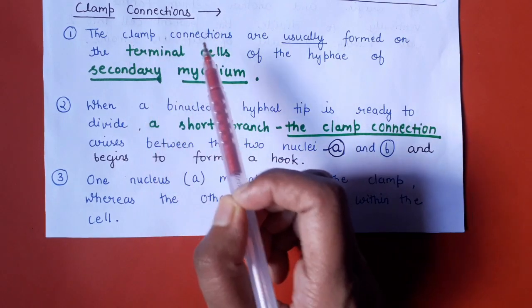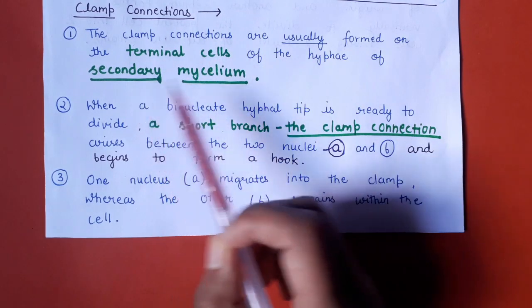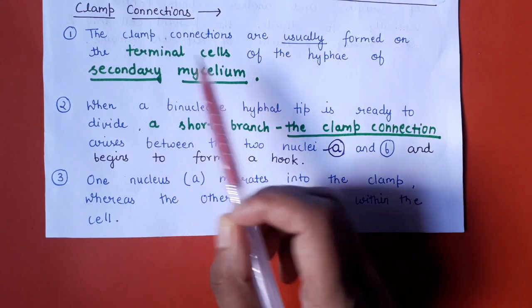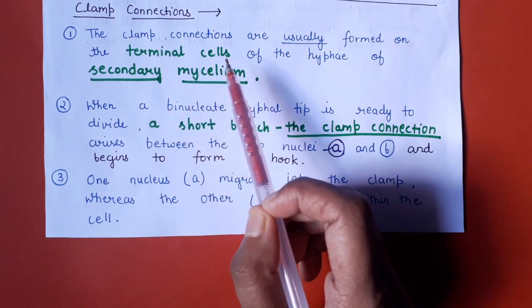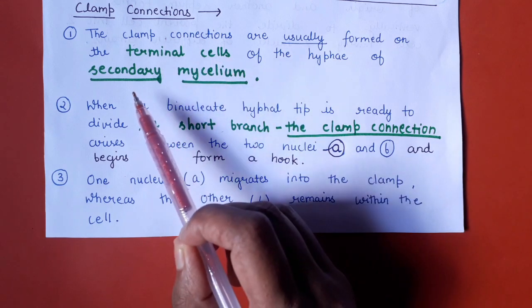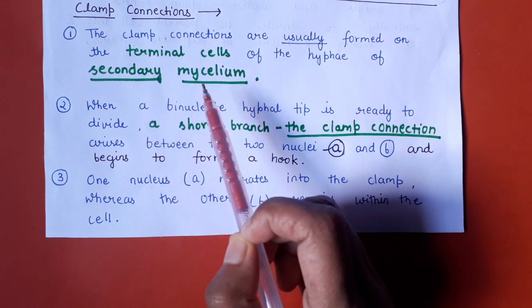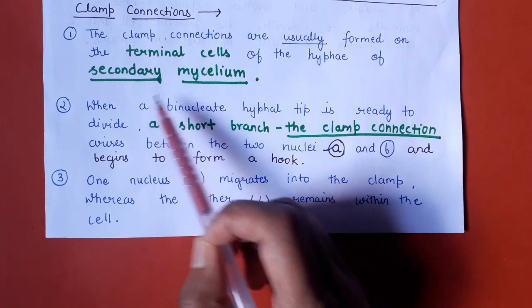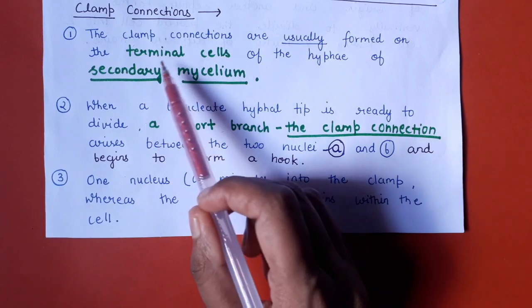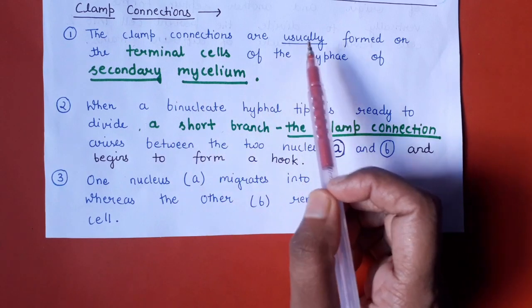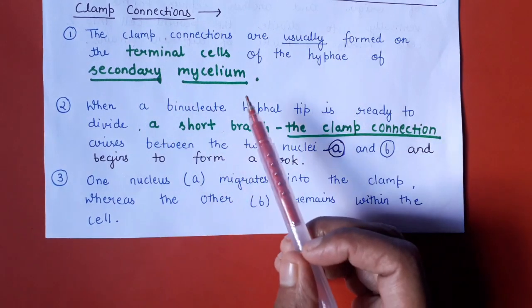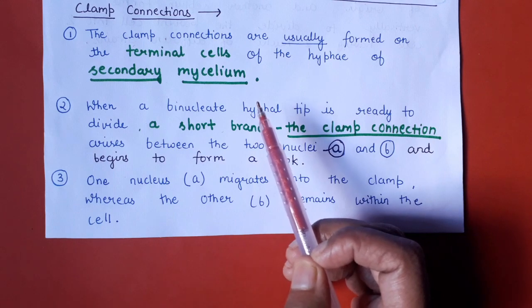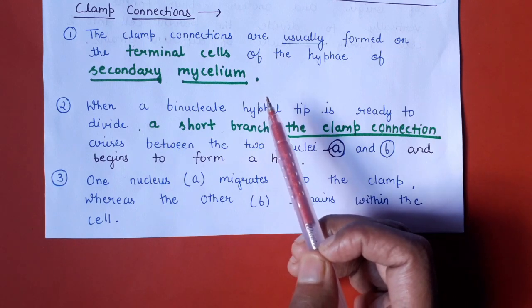Clamp connections are found in the terminal cells of secondary mycelium. The secondary mycelium term was explained before so that you can easily understand clamp connections. Clamp connections are usually associated with secondary mycelium.